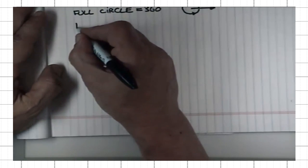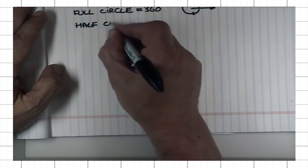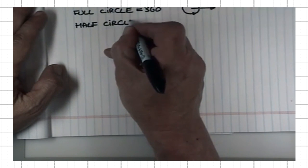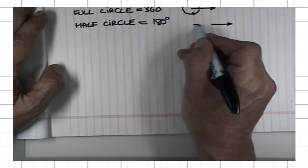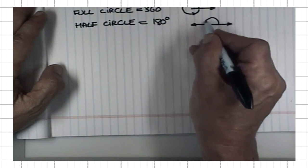Half circle is just half of this value, 180 degrees. That's when I rotate the arrow only halfway from here to there.